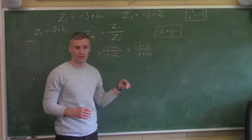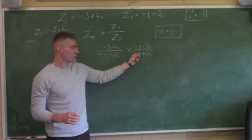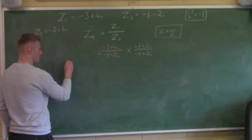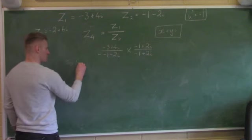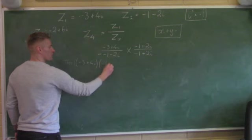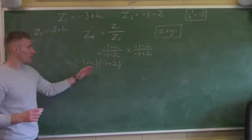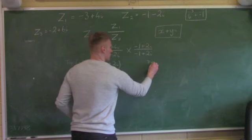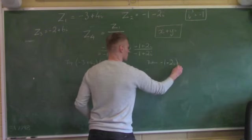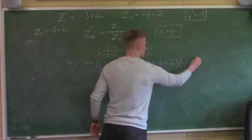It's always whatever's on the bottom that we multiply by the conjugate. Remember from part A — changing the sign of the imaginary part. If it was negative we change it positive. Notice minus 1 stays as minus 1. Now we're going to multiply top by top: minus 3 plus 4i multiplied by minus 1 plus 2i.